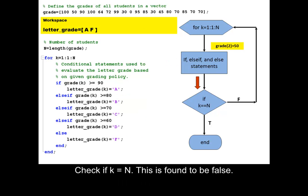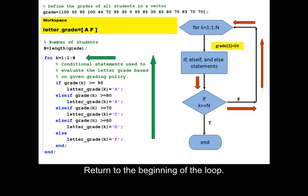Check if k is equal to n. This is found to be false. Return to the beginning of the loop.